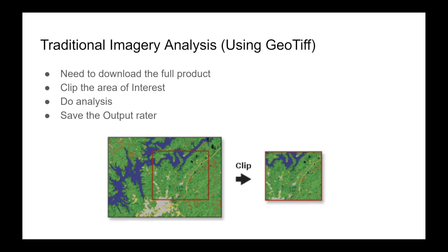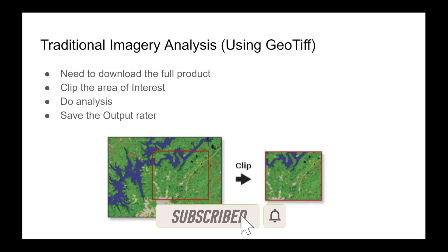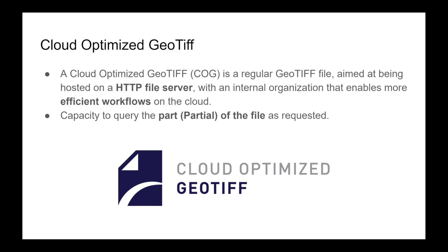Recently, with the introduction of COG, I can use cloud platforms like Google Earth Engine to download just my area of interest. So what is the Cloud Optimized GeoTIFF? It is a regular GeoTIFF file aimed at being hosted on an HTTP file server, with an internal organization that enables more efficient workflows on the cloud.